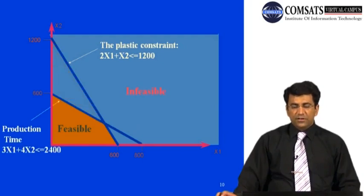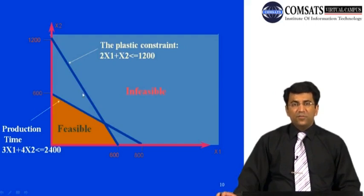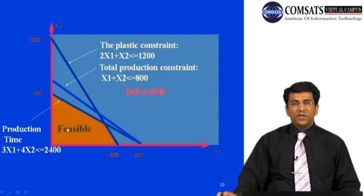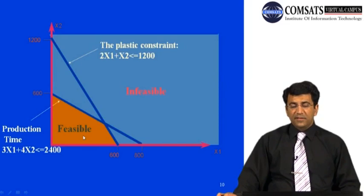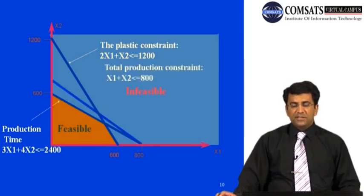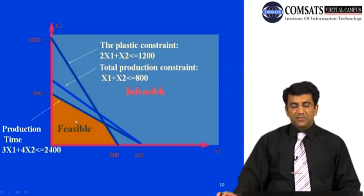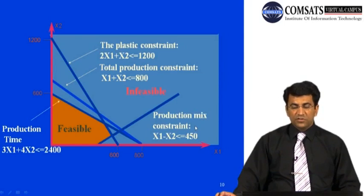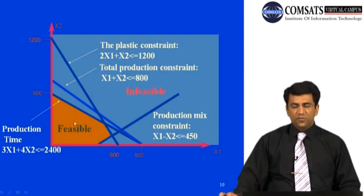The second line is the production time constraint. All area below that line is feasible for it. The common area satisfying both lines is our combined feasible region. Adding the third constraint — total production x1 plus x2 ≤ 800 — further restricts the region. Finally, the fourth constraint x1 minus x2 ≤ 450 is drawn, giving us the feasible region satisfying all four constraints.